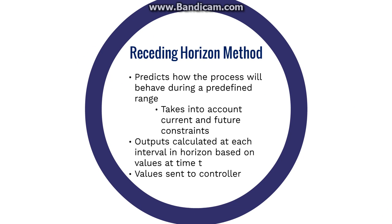The receding horizon method predicts the behavior of a predetermined range or horizon. It takes into consideration current and future constraints and calculates all the values within the horizon starting at time t. These values are then sent to the controller, which contains the control law, where all values at intervals greater than t are rejected.